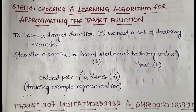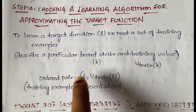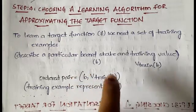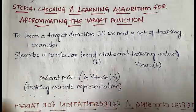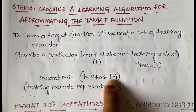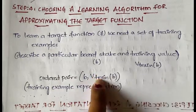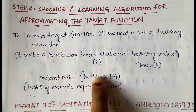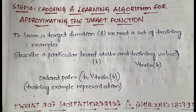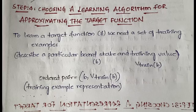When you represent a training example, you represent it in the form of an ordered pair where the first coordinate (the x-coordinate or abscissa) is b, which is the board state, and the second coordinate (the y-coordinate or ordinate) is v_train(b). So a training example is represented as the ordered pair (b, v_train(b)). Training examples and target functions are different — don't confuse them.